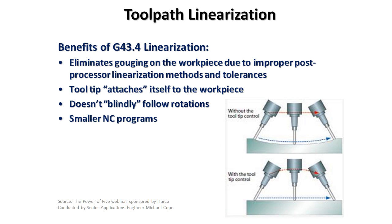This is a feature or a code that can be used to eliminate the swirls and the gouges and some of the other things that we see in five-axis motion, especially in simultaneous motion, that gives us imperfect parts.